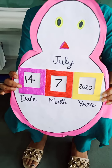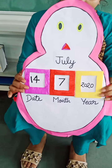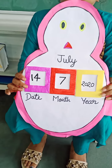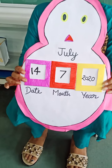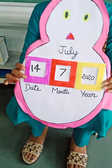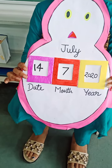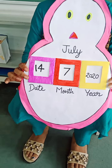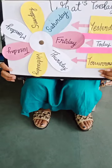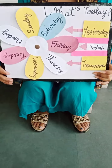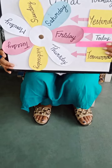Do you know February is the special month of the year? It has 28 or 29 days. Every 4 years, that year is called a leap year. In all, there are 365 days in a year and 366 days in a leap year. Now I will show you a week.